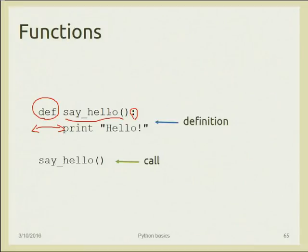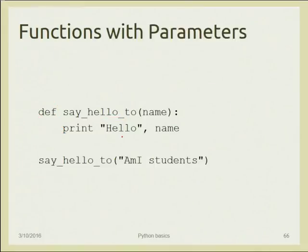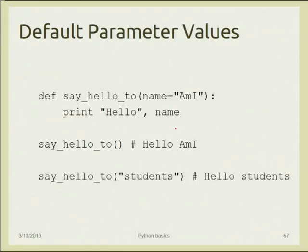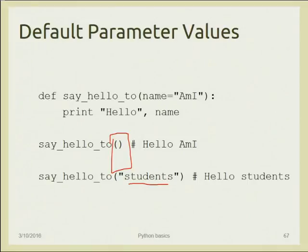When the Python interpreter executes a function call, it runs the function body. A function can also have a parameter — for example, passing 'MI students' causes the function to print 'hello MI students'. A function can also have a default parameter: if an explicit argument is passed it uses that; if no argument is given, the parameter defaults to a predefined value and prints 'hello MI'.